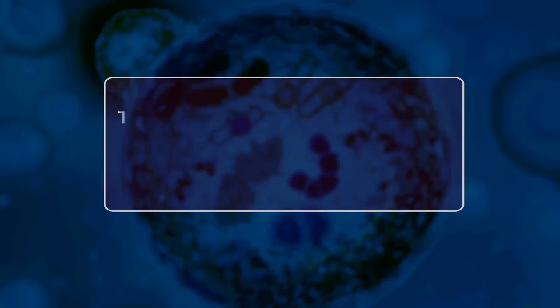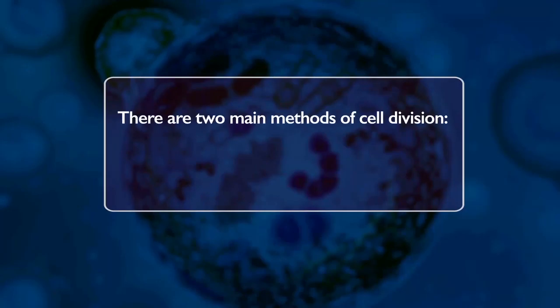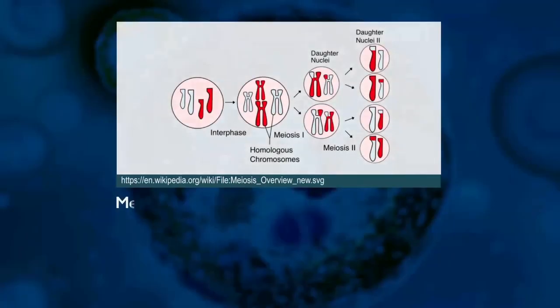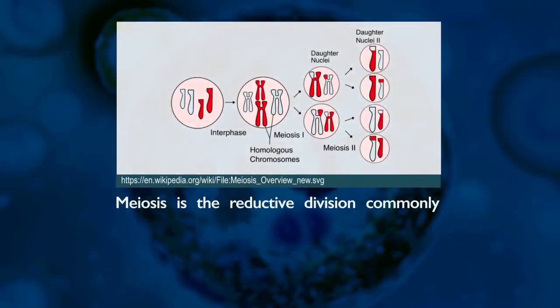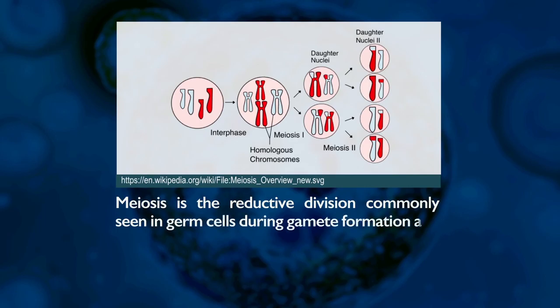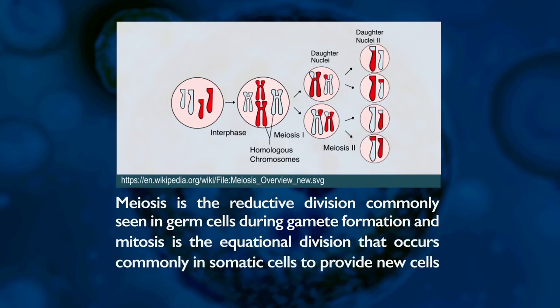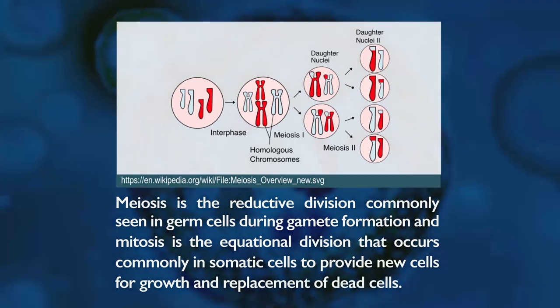Cells form the structural and functional units of all organisms, and cell division helps in the growth of organisms and in maintaining tissues. There are two main methods of cell division: mitosis and meiosis. Meiosis is the reductive cell division commonly seen in germ cells during gamete formation, and mitosis is the equational division that occurs commonly in somatic cells to provide new cells for growth and replacement of dead cells.